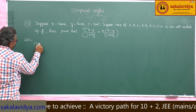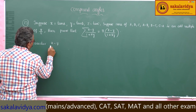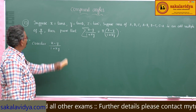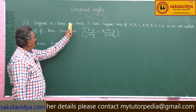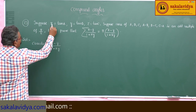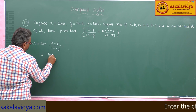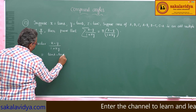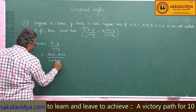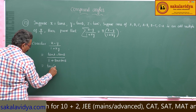Consider (x minus y) by (1 plus xy). Let us substitute x is equal to tan a, y is equal to tan b, z is equal to tan c. This becomes tan a minus tan b by 1 plus tan a times tan b. This is nothing but the formula equals tan of (a minus b).